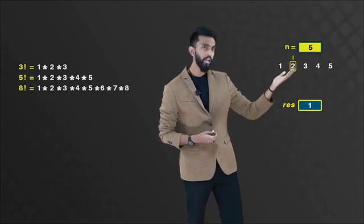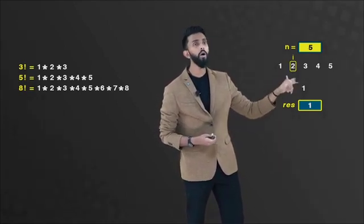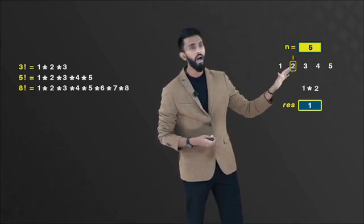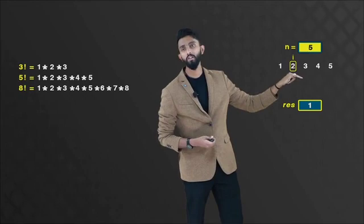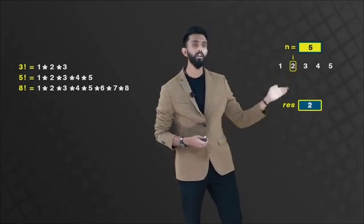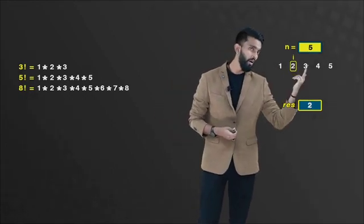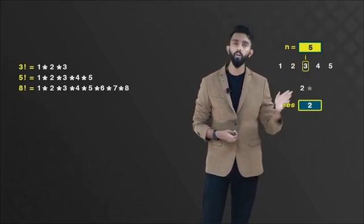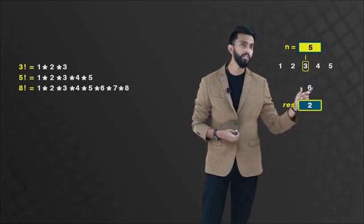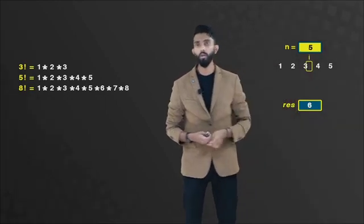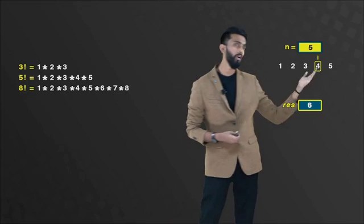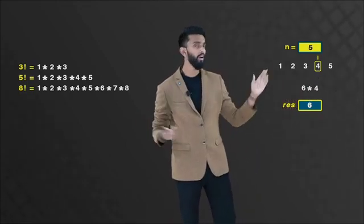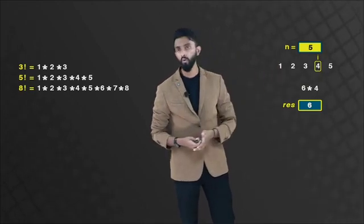Take the i value, take the existing result value, multiply both of them together. 1 into 2 is nothing but 2. And once you get 2, that is the value you must update to result. You are within a loop. i value proceeds. It goes to 3. Take the i value, take the result value, multiply them together. 2 into 3 is 6. And that is what you should be storing. Move the i value forward. Multiply them together. 6 into 4 is nothing but 24.